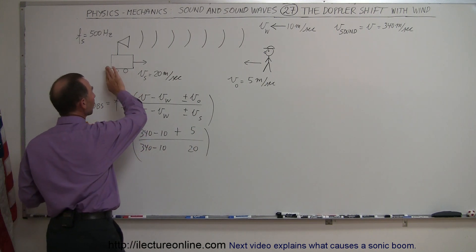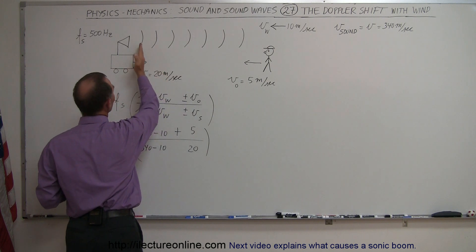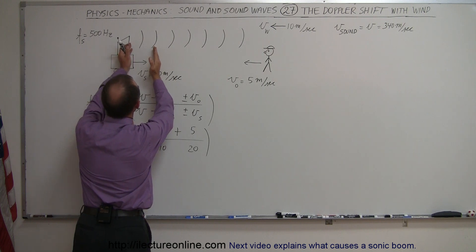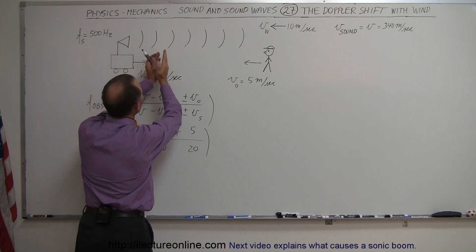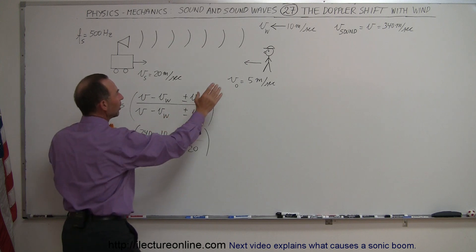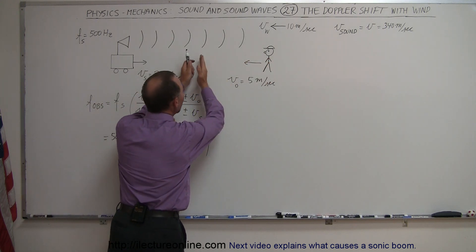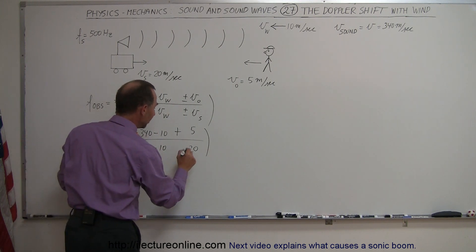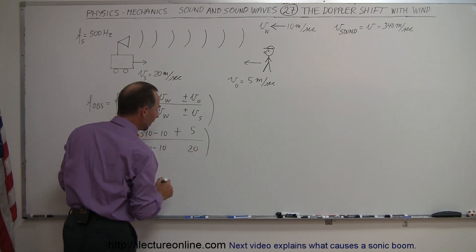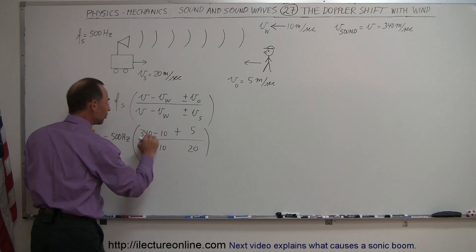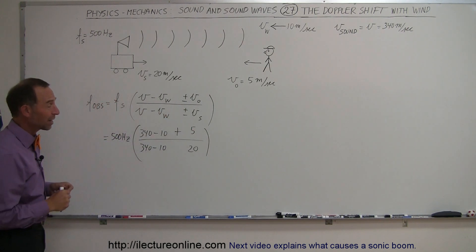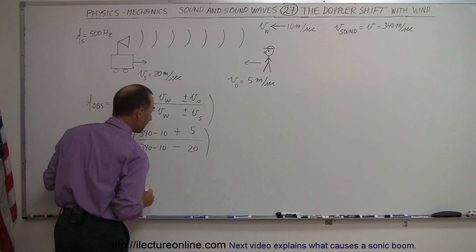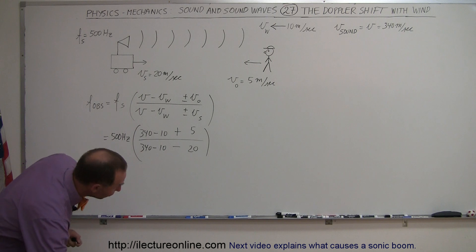The source is moving towards the right, which means as the waves are being put out, they're going to be closer together because when the next wave comes out the source has moved a little bit. The observer will then hear a higher frequency. But since the number is in the denominator, what sign do we need to make this overall fraction a bigger number? A smaller number in the denominator, which means we have to have a minus there. Now we're ready to do the calculation.